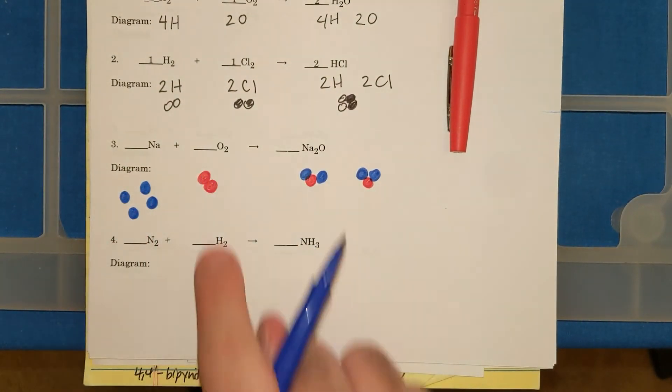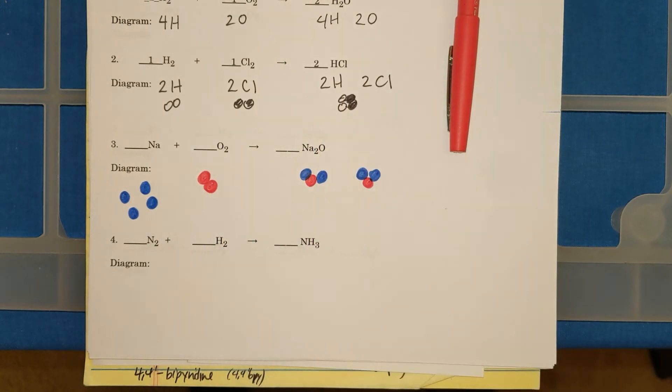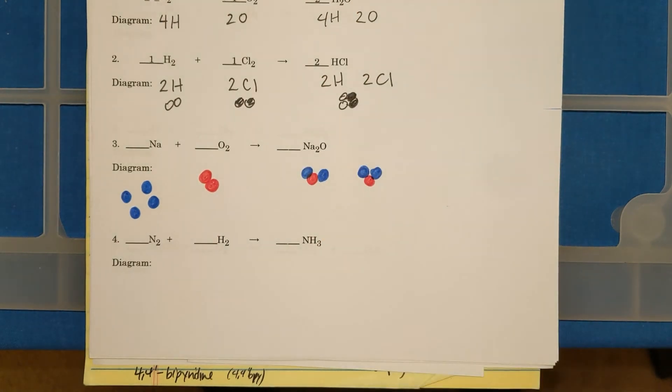I have 4 Na's, 2 O's. 4 Na's, 2 O's. And I could count how many of each element or compound I have and write coefficients.